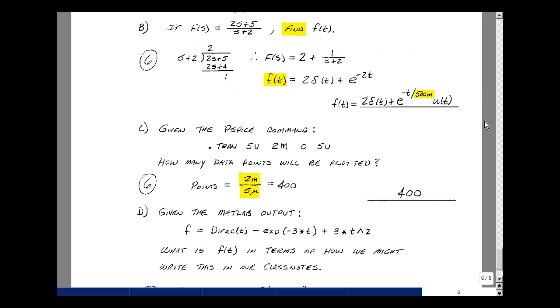Given the following PSPICE command, .tran 5 micro, 2 milli, 0, 5 micro. How many data points will be plotted? If we take the final value, divide it by the print step, that'd be 2 milli divided by 5 micro, and that'd be 400 points. That'd be the least number of points you would get in a simulation.